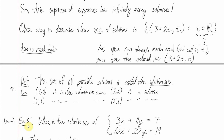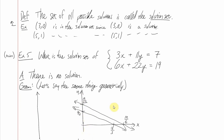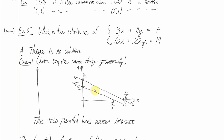Example 5: a system with two equations and two unknowns that has no solution. Geometrically, these are two distinct parallel lines that don't intersect at all — unlike Example 4 where the two equations described the same line. You might discover this algebraically by substitution, ending up with something like 14 = 19, which is never satisfied. The solution set is empty.